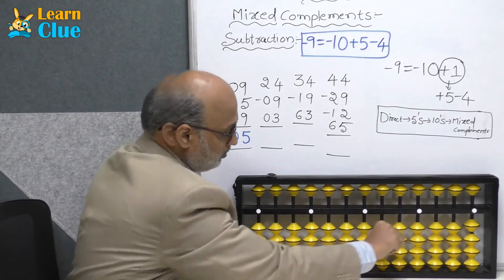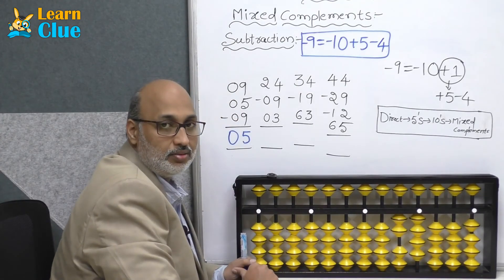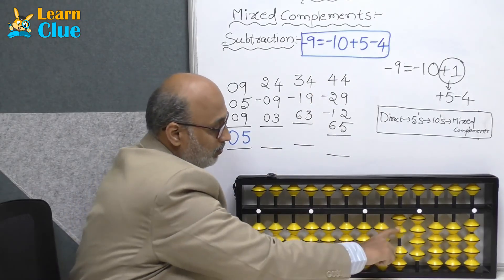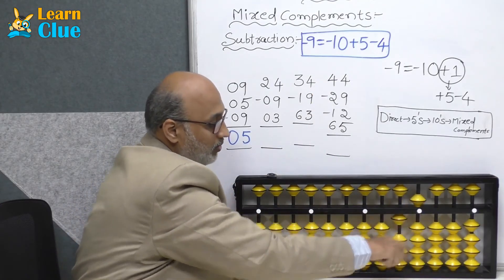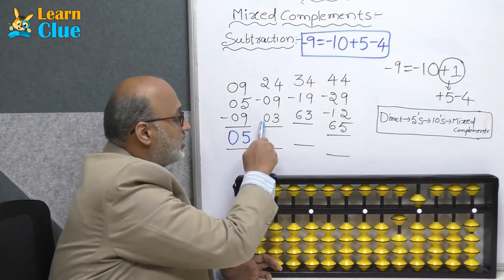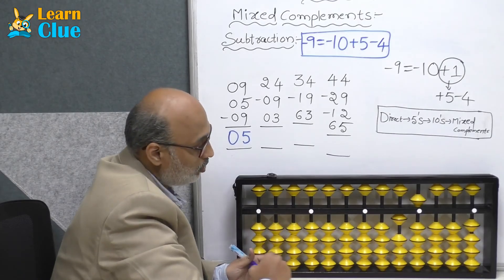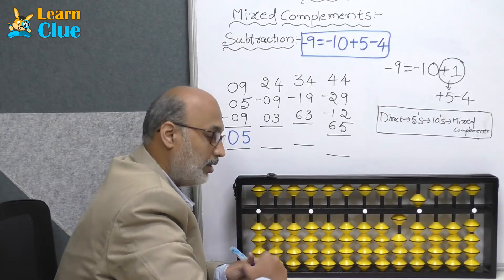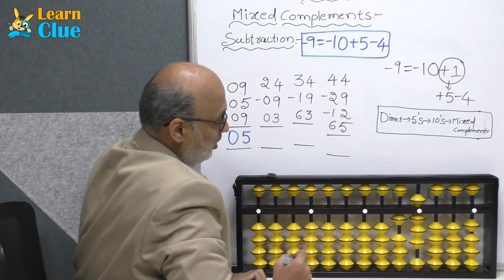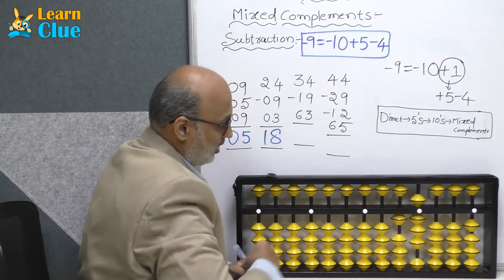Next problem: 24 minus 9. How to do minus 9 here? The same: minus 10 plus 5 minus 4. Now they are asking plus 3, which is direct. The answer is 18.